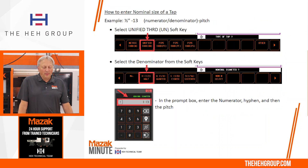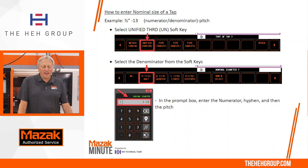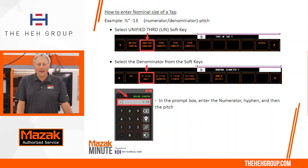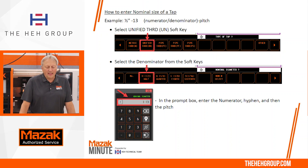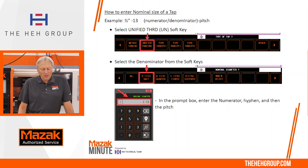How do you enter the nominal size of a tap? Here's an example of a half-13. On the soft keys you're going to see a selection for metric, unified, pipe, and you'll see pipe PT, pipe PF, pipe PS. In our case here we're going to select unified. The denominator is going to be the half inch, and finally in the prompt box we're going to type in 1-13.